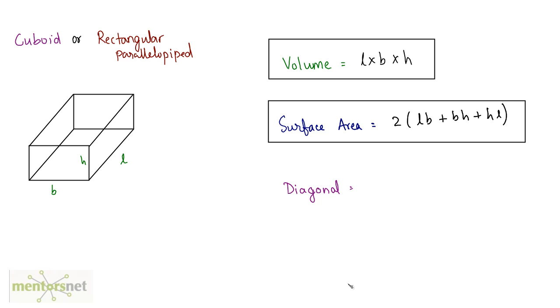Let's move on to the diagonal. How do you calculate the length of a diagonal? Let me first draw the diagonal. A diagonal is a line which connects one vertex to its opposite vertex. So this red line is the diagonal of this cuboid.